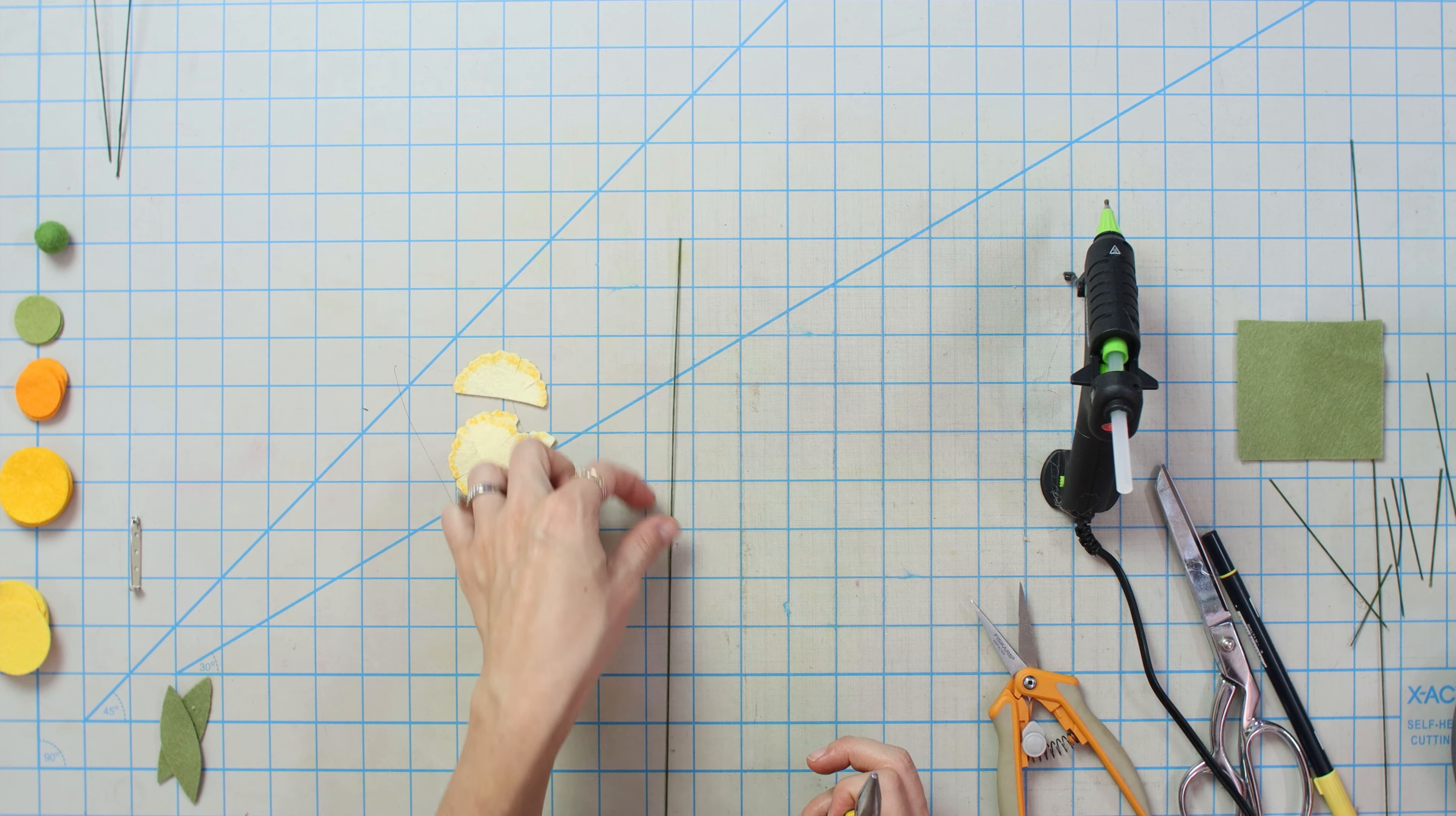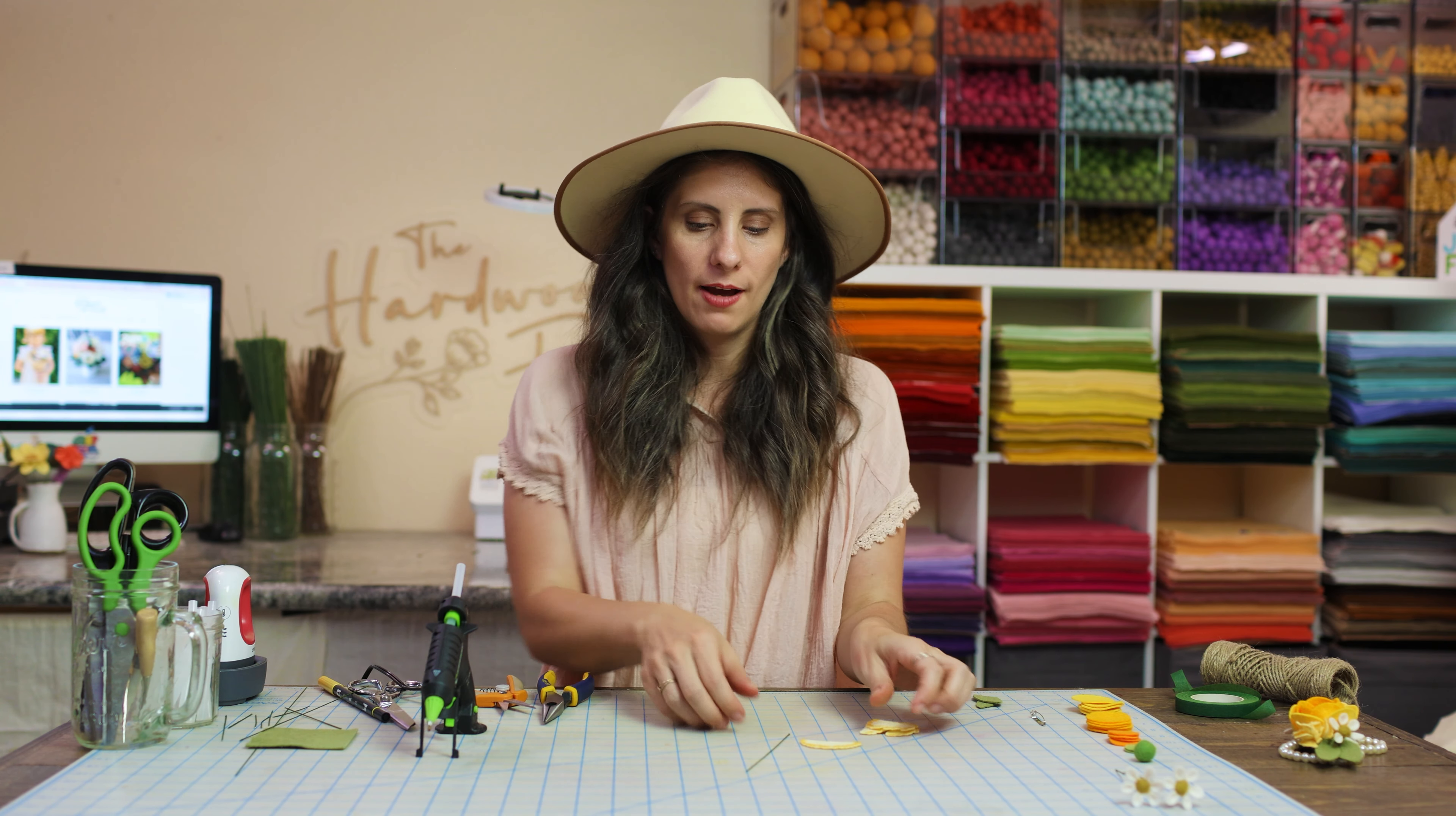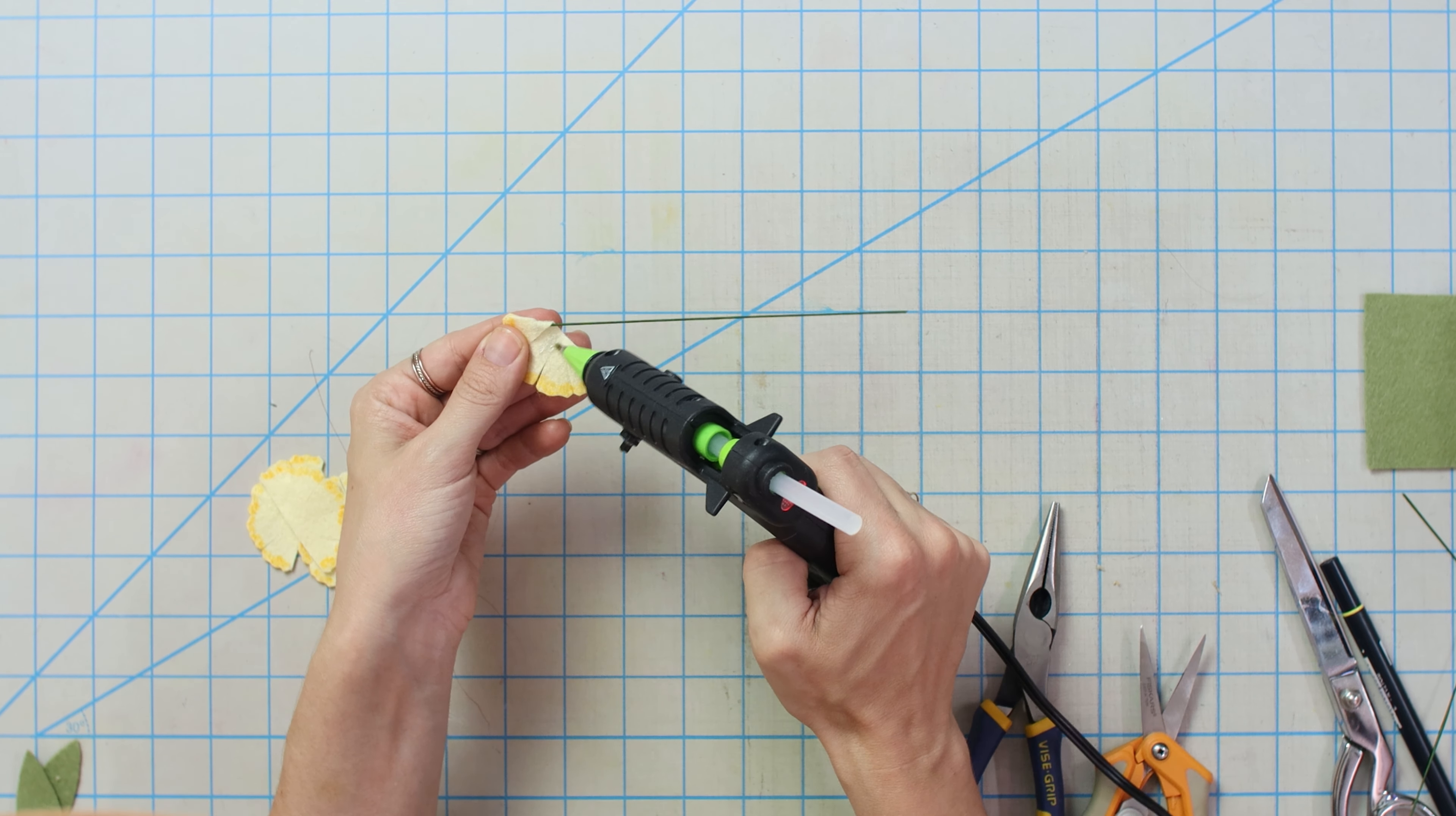We're going to get another wire here. This one's going to be a little bit longer because this is a stock flower, so it's going to be a longer flower. So you want to make sure you have enough wire. So I'm going to do this one probably about six inches long. Again, I'm way overkilling it on the wire. But it's way easier to have too much than it is to have too less.